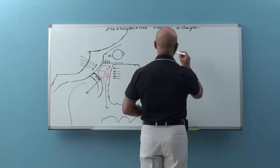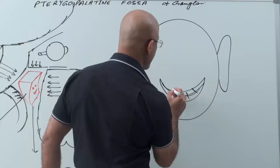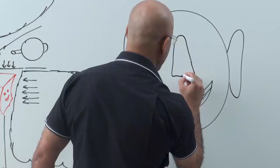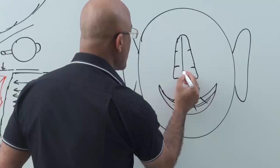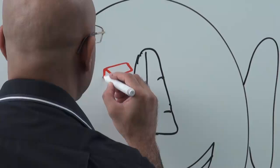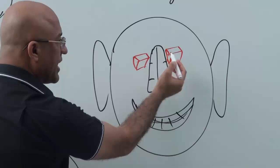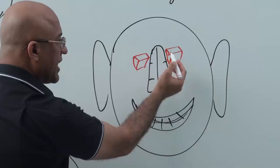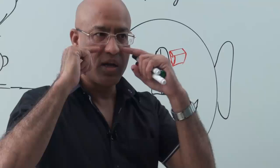Let me draw one more diagram showing its relationship with the infratemporal fossa and the nose. Here are your ears and nose just for orientation — nasal cavity. What is the relationship of the pterygopalatine fossa with the nose? It is on the side of the posterior deep part of the nose. When you enter the nasal cavity and move posteriorly, very posteriorly, on the right and left the pterygopalatine fossa is there.